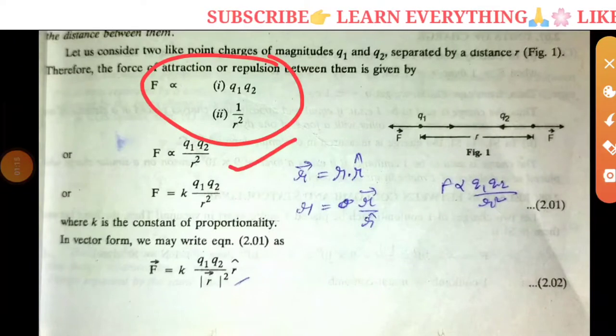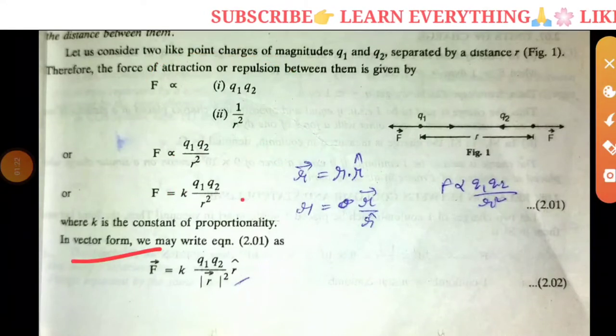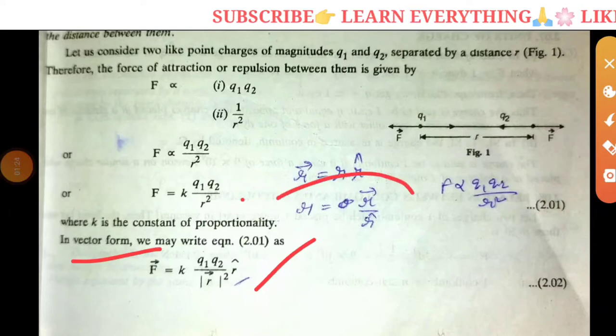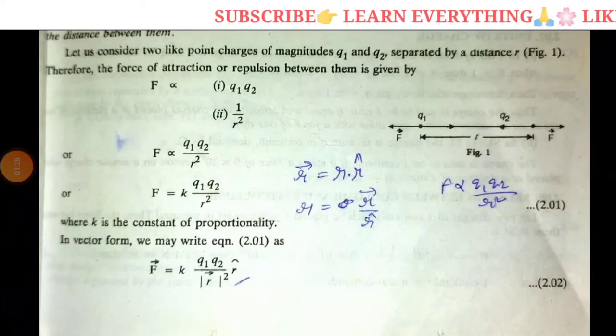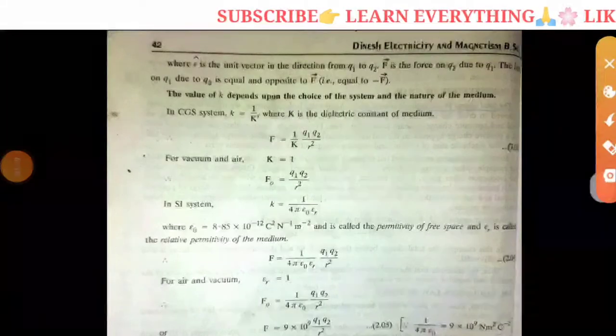The magnitude of force is proportional to the inverse square of distance. K is the proportionality constant. If we have vector form, the direction is given by r cap.